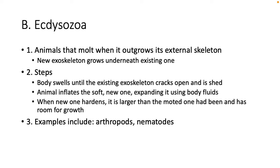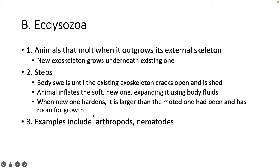On the flip side, we also have Ecdysozoans — animals that molt. They shed their external skeleton during development. Their body swells until the exoskeleton cracks open, and then they crawl out of it, inflate the soft new one, and it hardens into a new exoskeleton. We'll go into more detail with the molting process when we reach arthropods and insects and crustaceans.